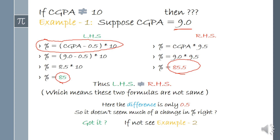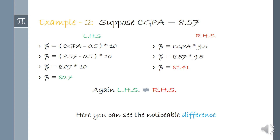I will explain again with Example 2. Here I have taken CGPA of 8.57 and written both formulas on each side. You put your CGPA in place of CGPA and calculate — on the left hand side you get 80.7, and on the right hand side you get 81.41. You can see the noticeable change in percentage between both sides.